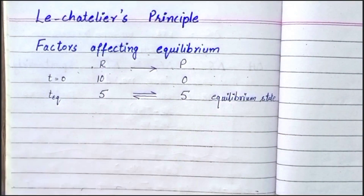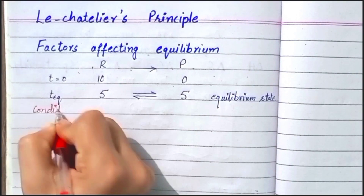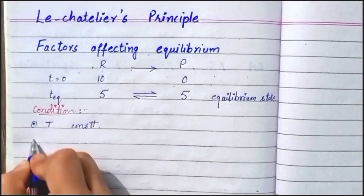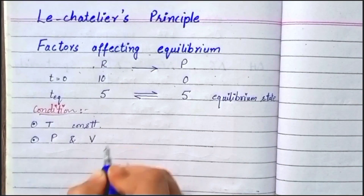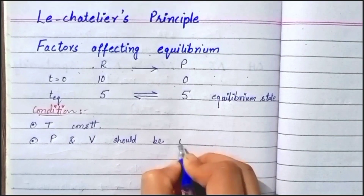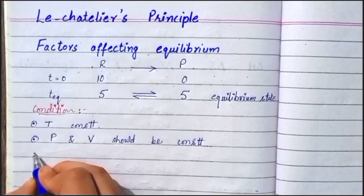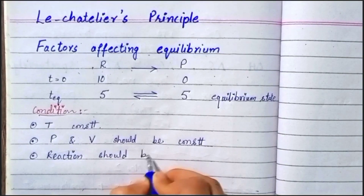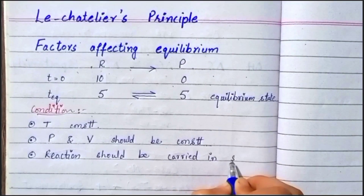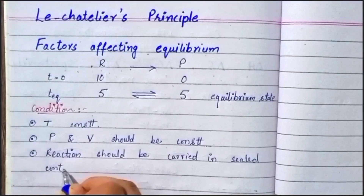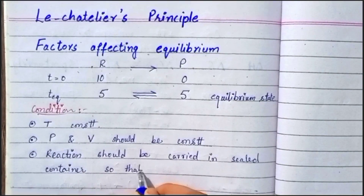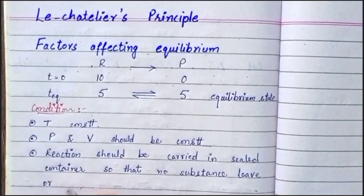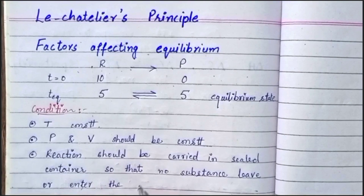The equilibrium state is achieved when certain conditions are fulfilled. The first condition is that the temperature must be constant. The second condition is that the pressure and volume should be constant. The third condition is that the reaction should be carried out in a sealed container so that no substance can leave or enter the reaction mixture.